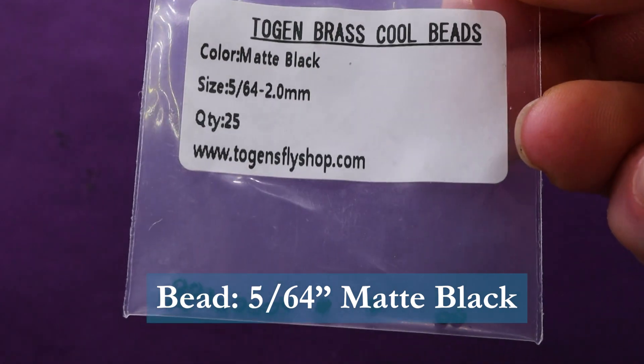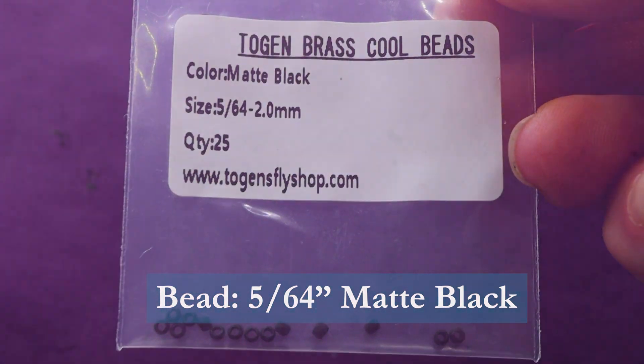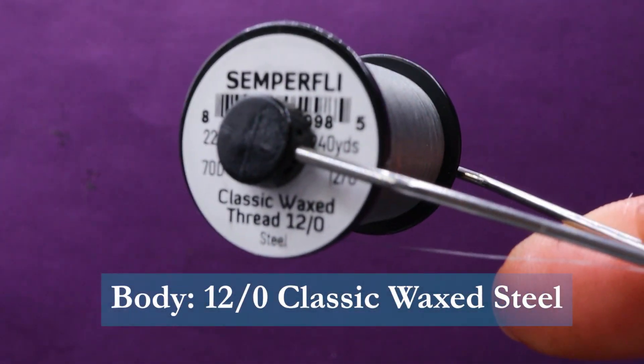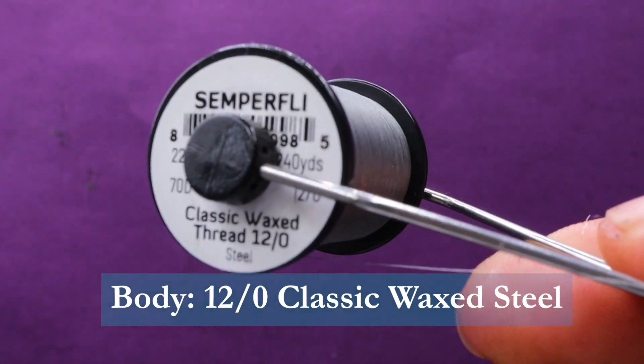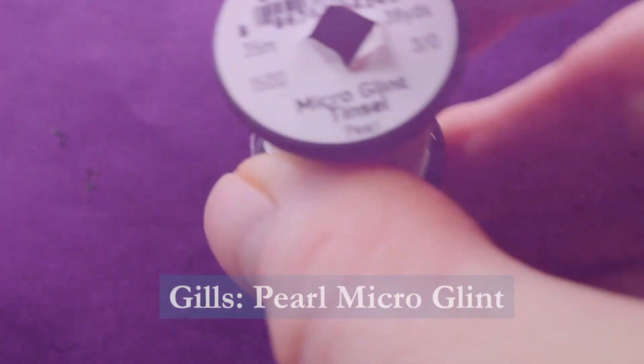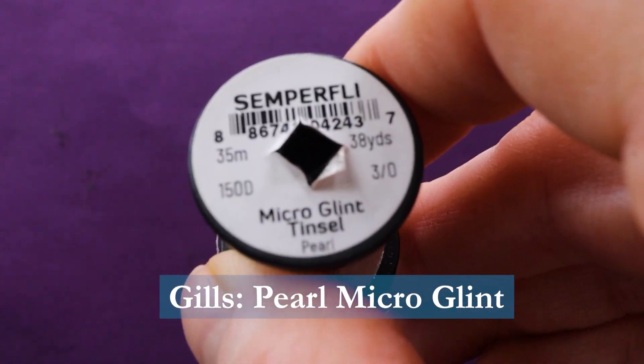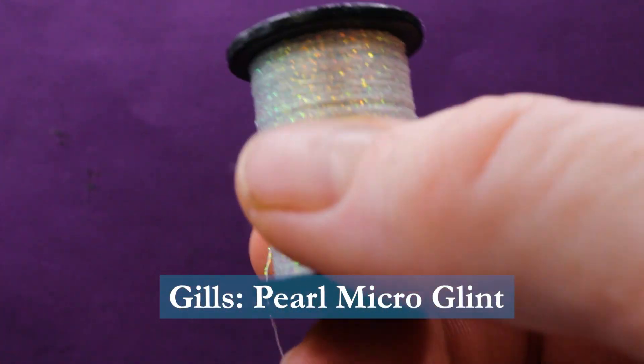If you don't have matte black you could use gunmetal, I've used both on this line and done well. For the thread body I'll be using classic wax thread in the color steel by Semperfly. For the gill I'm using micro glint tinsel in pearl by Semperfly.